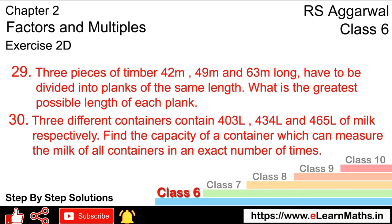Let's do question number 29 of exercise 2D on factors and multiples. Question 29: 3 pieces of timber, 42 meters, 49 meters, and 63 meters long, have to be divided into planks of the same length. What is the greatest possible length of each plank?